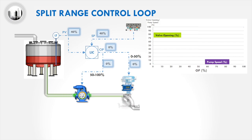This diagram shows a setup with split range control. The difference here is that the output of the controller now sends different signals to the control valve and the pump. The control valve will receive a 0 to 50% signal range, while the pump will receive a 50 to 100% signal range.